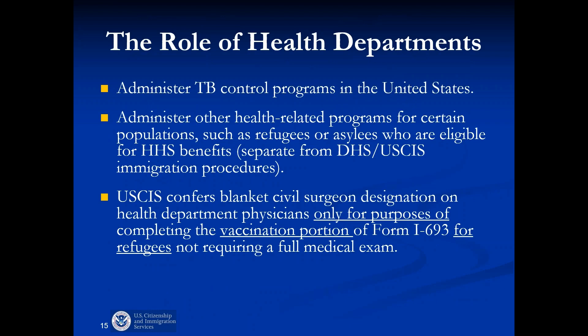A key role of health departments throughout the country is that they play a vital role in TB control. They also work especially with refugees and asylum applicants. A physician with the health department is able to serve as a civil surgeon under what we call blanket designation, but only for purposes of providing the vaccination record portion of the Form I-693. They are also able to get individual designation, though most health department civil surgeons work with the refugee population completing just the vaccination record part.